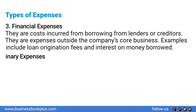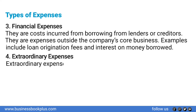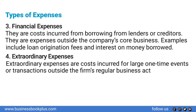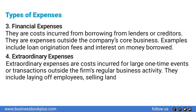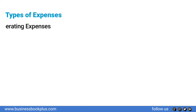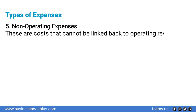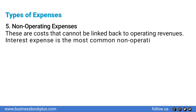Number four: Extraordinary expenses are costs incurred for large one-time events or transactions outside the firm's regular business activity, including laying off employees, selling land, or disposal of a significant asset. Number five: Non-operating expenses are costs that cannot be linked back to operating revenues; interest expense is the most common non-operating expense.